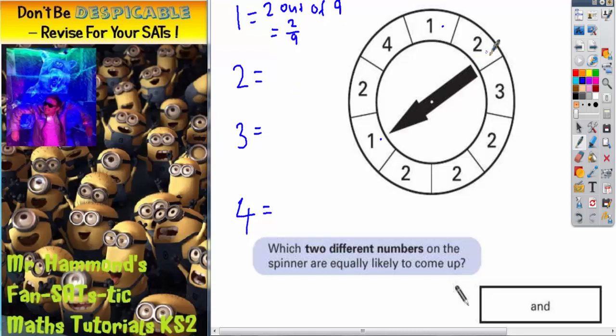The number 2, there's 1, 2, 3, 4, 5. So 2 is 5 out of 9, or 5 ninths if you like.